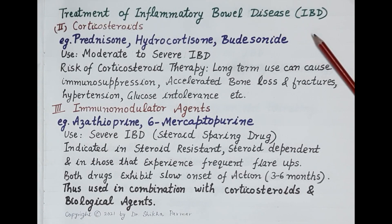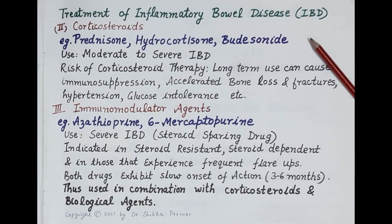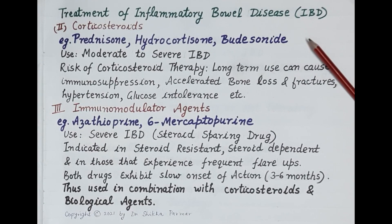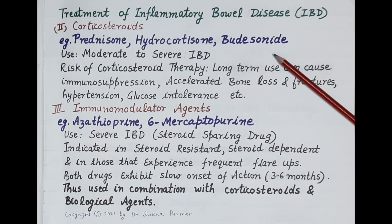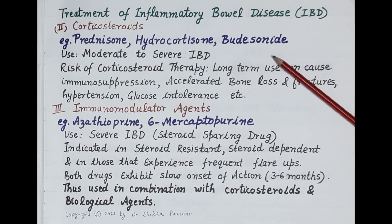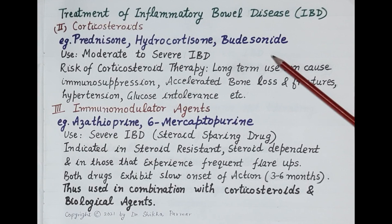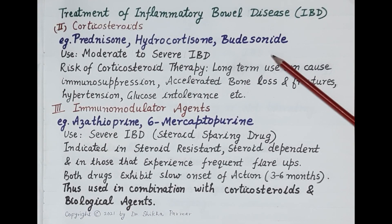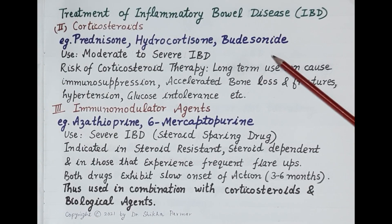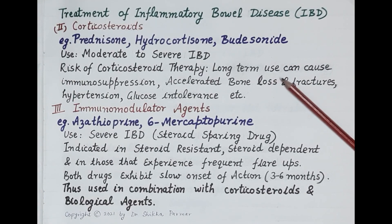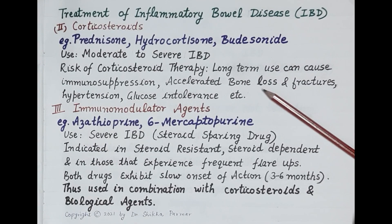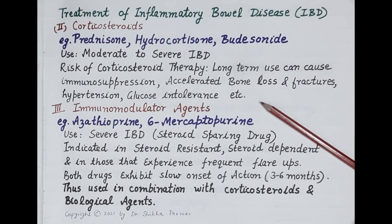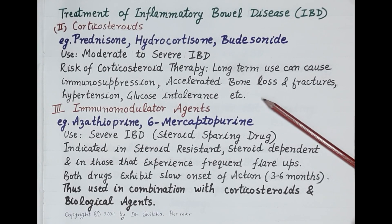The next category of drugs is corticosteroids — prednisone, hydrocortisone, and budesonide. These are very important anti-inflammatory and immunosuppressive agents and are the drug of choice for moderate to severe inflammatory bowel disease. Symptomatic relief is usually seen within three to seven days of oral prednisone therapy, and remission is observed in about two to three weeks. Intravenous methylprednisolone therapy is effective for rapid relief. However, long-term use is associated with immunosuppression, accelerated bone loss, fractures, hypertension, and glucose intolerance, so corticosteroids are generally used for short periods.